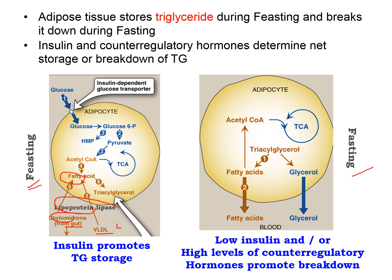Fatty acids can be released and subsequently converted into triacylglycerol for storage. Glucose, on the other hand, will enter through the insulin-dependent glucose transporter, which is your GLUT4 transporter. Here it undergoes glycolysis to give rise to acetyl coenzyme A, which can be used for either ATP production or the synthesis of more fatty acid molecules. There is also the hexose monophosphate pathway, which gives rise to a pentose sugar and NADPH. So overall, you have a net anabolic reaction.